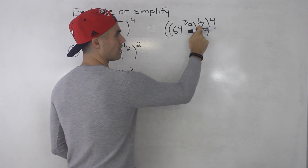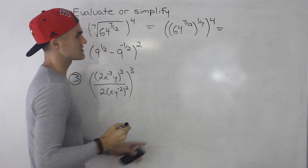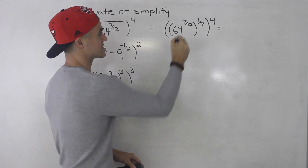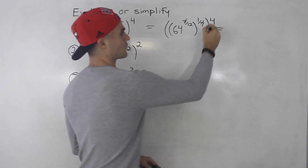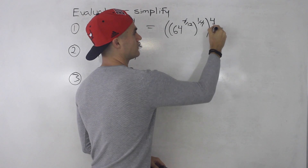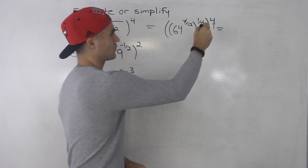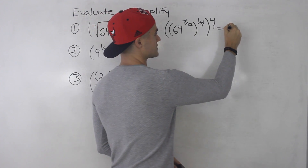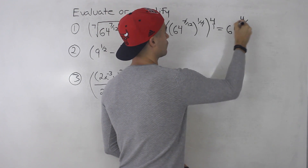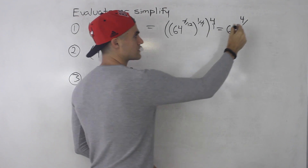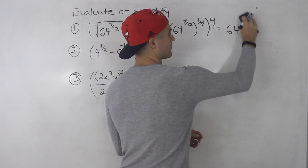From here we can just multiply all of these exponents. So 7 over 12 times 1 over 7 — notice the 7s will cancel out. And then this 4 is like over 1, so the 7s cancel out. We get 1 times 1 times 4, which is 4. So we've got 64 to the power of 4 over 12, and 4 over 12 simplifies to 1 over 3.